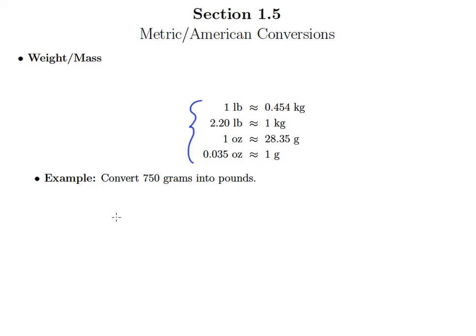The example says convert 750 grams into pounds. So we could go grams to kilograms to pounds, according to the equivalencies we have. Or we could go grams to ounces to pounds.